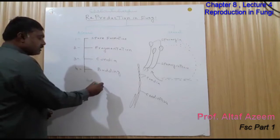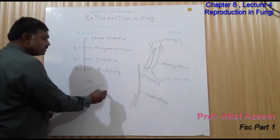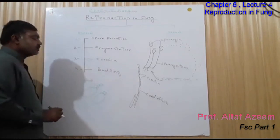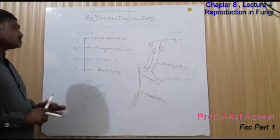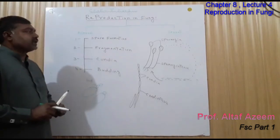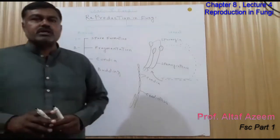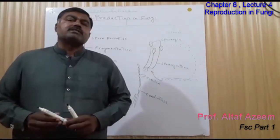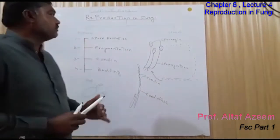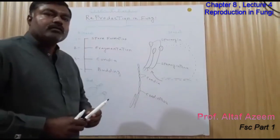When the bud grows large enough, it detaches from the parent body and produces a new fungal body. This process is known as budding, and its well-known example is yeast. So these are the different methods of asexual reproduction found in fungi.